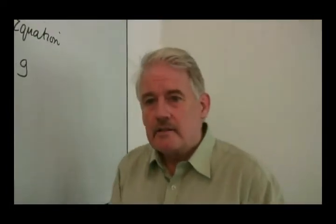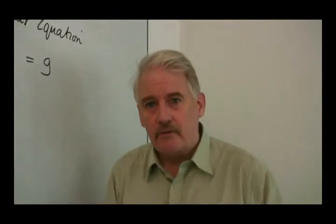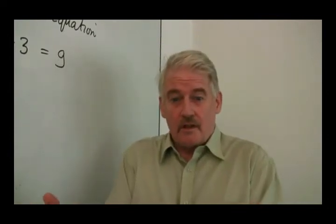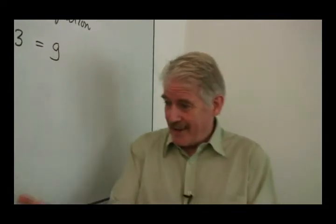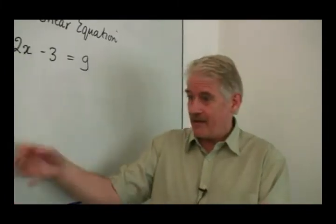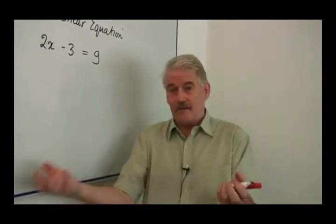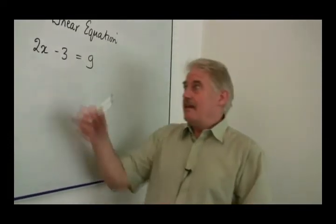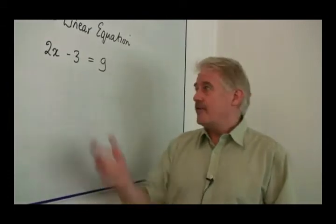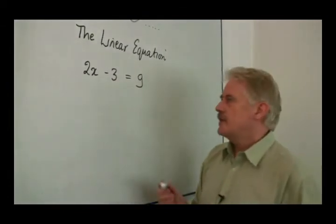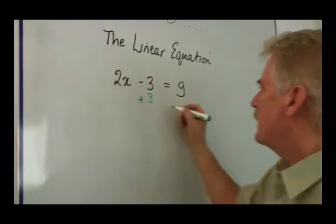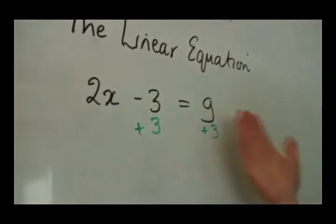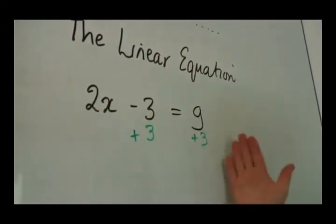Now, if you've got two equal things and you do the same to both of them, even though you've changed them, they are still equal. If I've got 9 pounds of lead here and 9 pounds of lead here and I take 3 pounds off here and 3 pounds off here, I've got 6 pounds here and 6 pounds there — still equal. So with my equation, if I do the same to both sides, they're still equal. If I add 3 to this side, I must add 3 to that side.